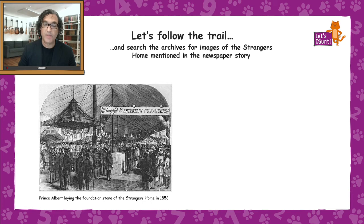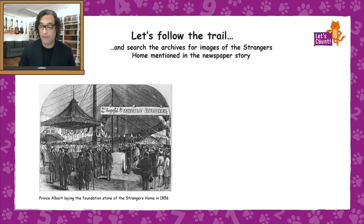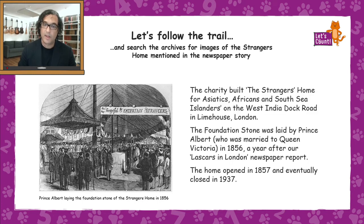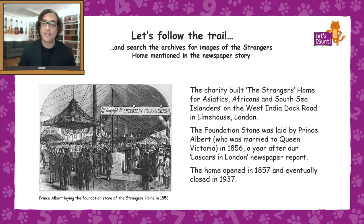Here is a picture of the laying of the foundation stone when the Stranger's Home was first built in 1856 — an engraving from a newspaper, since newspapers in 1856 couldn't print photographs. The charity built the Stranger's Home for Asiatics, Asians, and South Sea Islanders on the West India Dock Road in Limehouse, London, near what is today called Canary Wharf. The foundation stone was laid by Prince Albert in 1856 — a year after the Lascars' court case. The home opened in 1857 and was eventually closed in 1937.